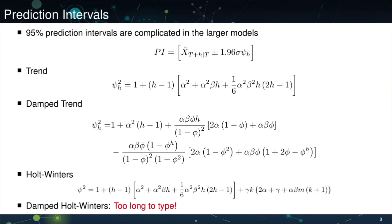Prediction intervals are available from all of these models. Deriving them isn't particularly painful, but we need to understand an alternative representation of the models. Once written in this alternative representation, it's straightforward — essentially just like the previous SES model, which was an integrated moving average. They also have a similar ARMA-type structure, and once you have that, it's just a question of crunching through the algebra to find the terms.